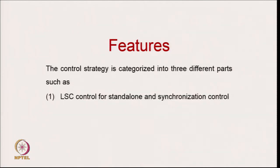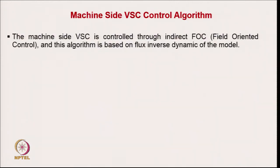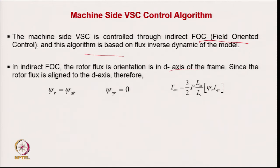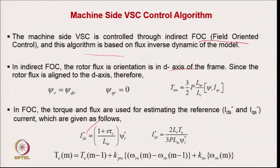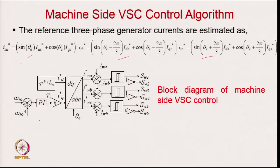Control stages are categorized into three parts: load-side converter control for standalone and synchronization, load-side converter control for grid-connected mode, and machine side converter with solar PV control. The computer algorithm has portions for grid-connected mode, standalone mode, and synchronization. Machine side voltage control uses indirect vector control (field-oriented control) because variable speed operation is needed for maximum wind energy extraction. In the DQ frame, D-axis and quadrature-axis current expressions are used with a speed controller equation to get three-phase generator reference current, with gating signals for the machine side converter for maximum power tracking.